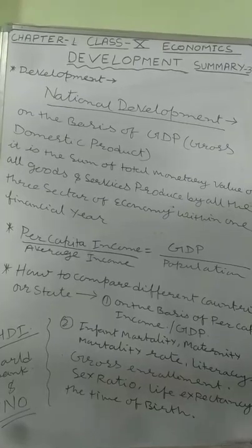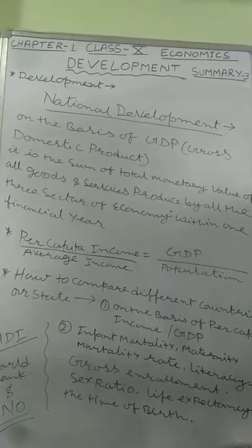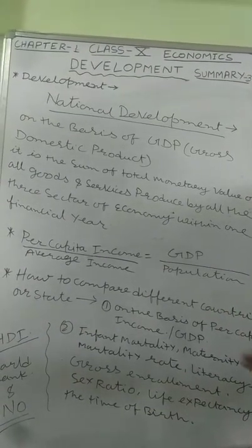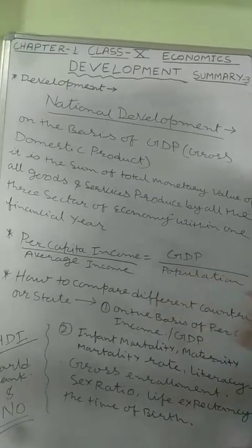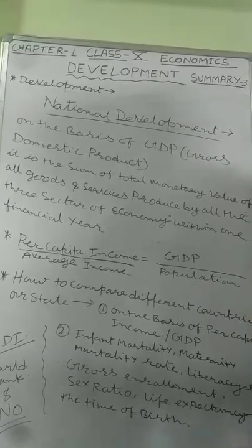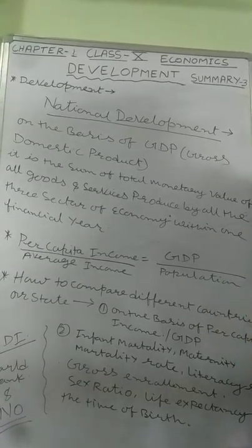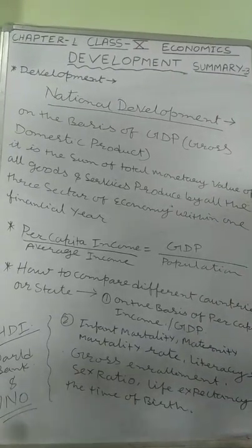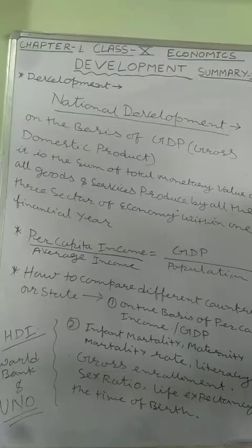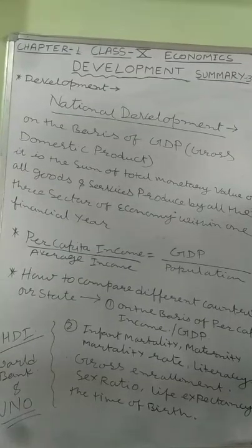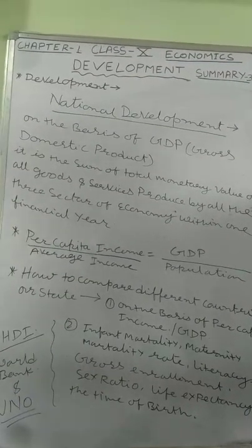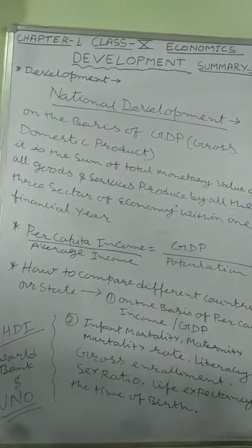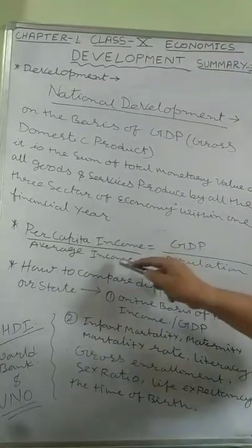Nowadays we can compare different nations on the basis of per capita income or GDP, but per capita income and GDP is not enough. In India, per capita income is not a right indicator. Our per capita income is around 86,000–90,000 rupees, but the planning commission has pointed out many different aspects. So per capita income is a broader measurement for comparison of national development in the world, but it is not a right indicator.